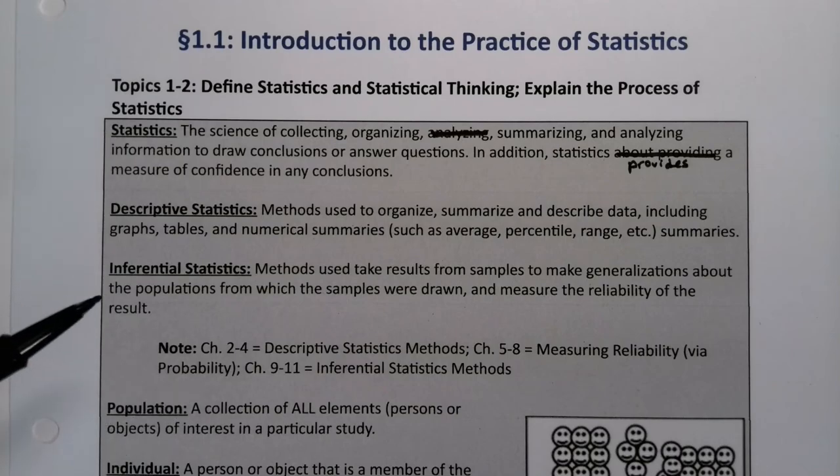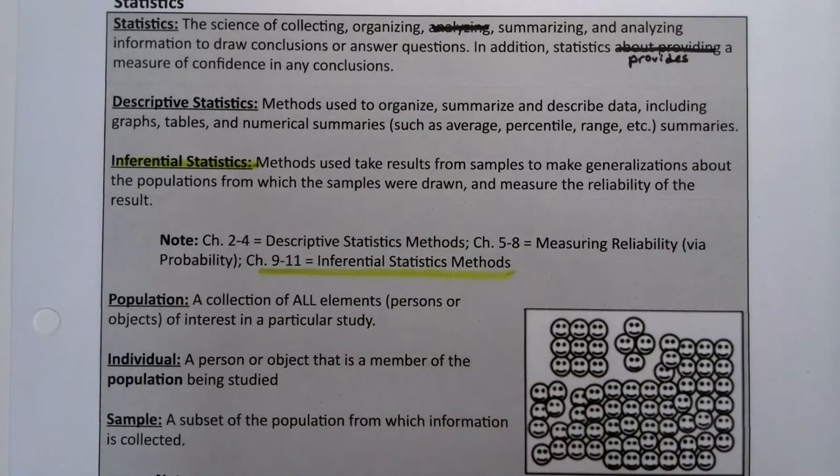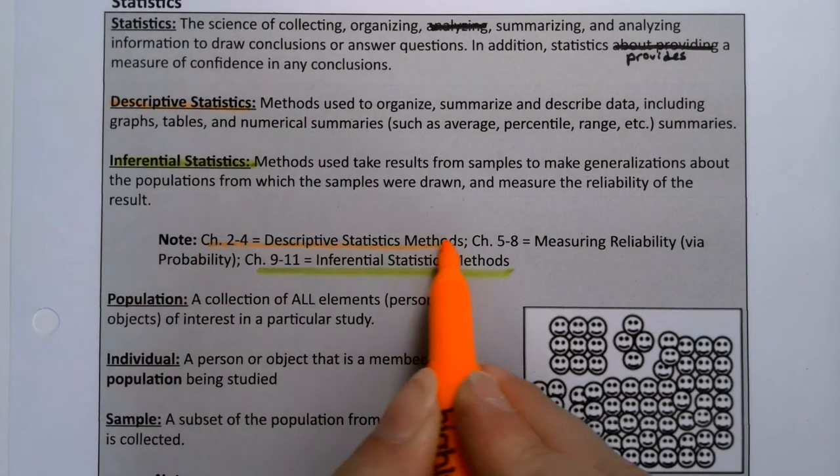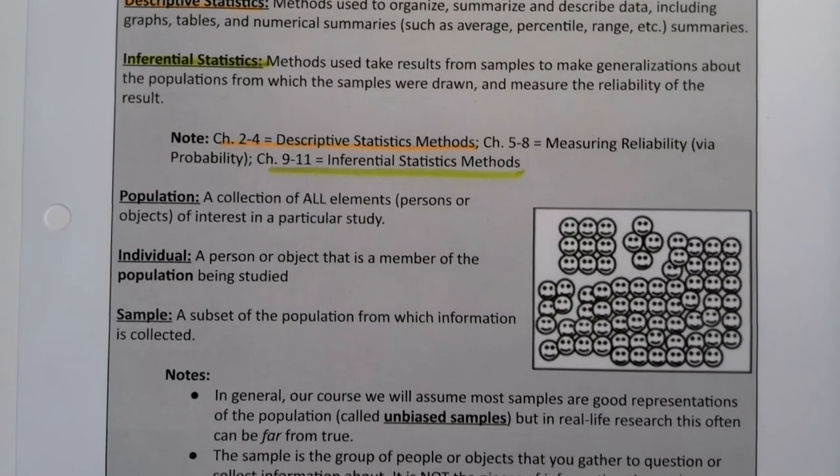Chapters 9, 10, 11, and if you went on to a statistics 2 class, 12, 13, 14, 15, they're all about inferential statistics, which is when you're trying to gain that measure of confidence and draw conclusions. You want to measure the reliability of the results, make those generalizations from the sample to the population. You can't actually make that leap unless you take some time in chapters 5 through 8 measuring reliability - working with probability, something called the central limit theorem. We'll take probability in the middle to bridge that gap between those two topics.